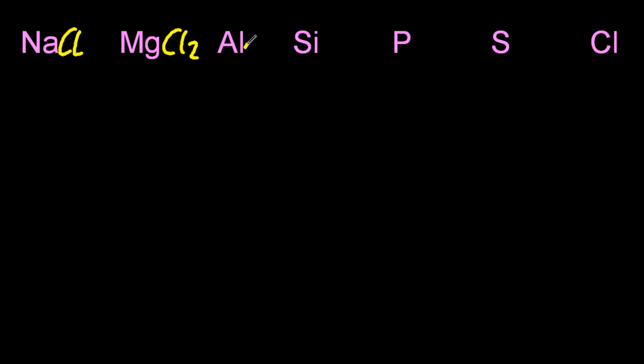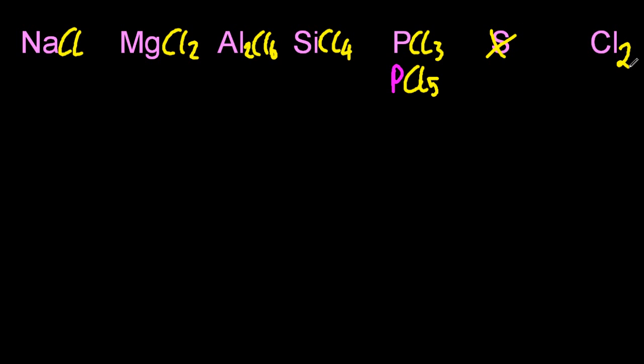All right then, the chlorides as we go across: Al₂Cl₆, that's a little bit covalent; silicon tetrachloride; there are two chlorides of phosphorus that you need to remember; sulfur, that isn't mentioned; and Cl₂, the chloride of chlorine, strangely.